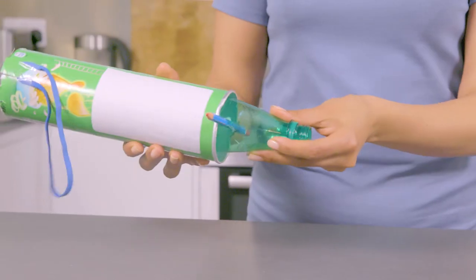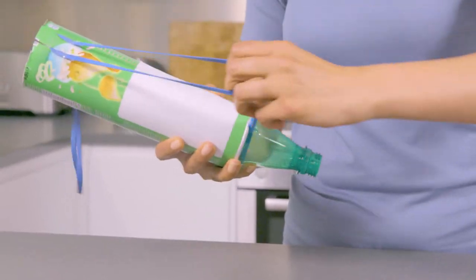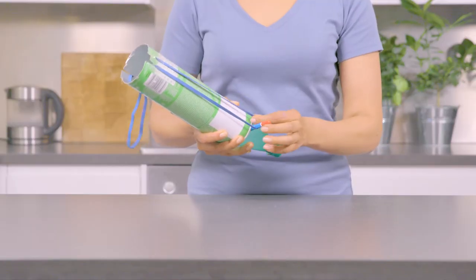Push the bottom of the bottle into the top end of the crisp can and pull the rubber bands around each end of the pencil.